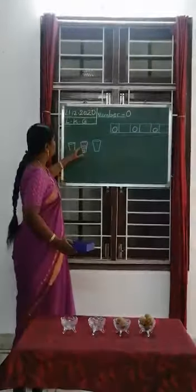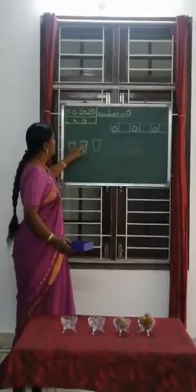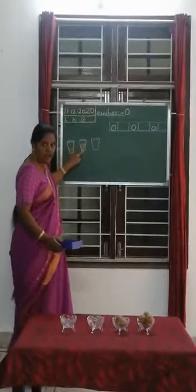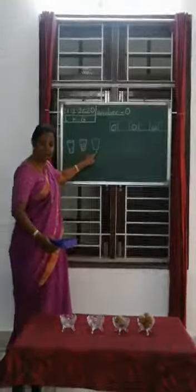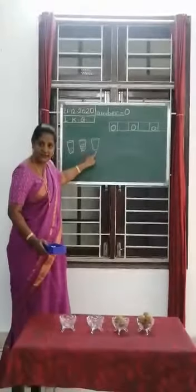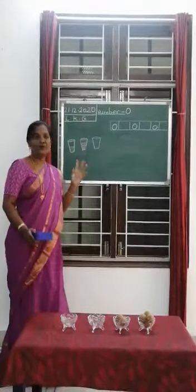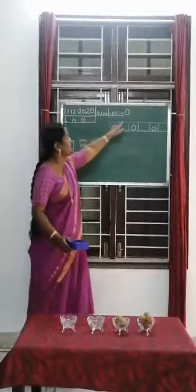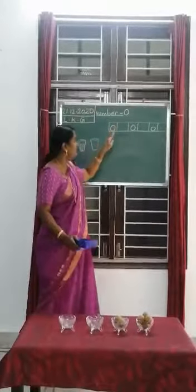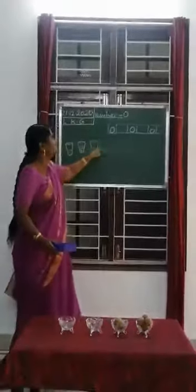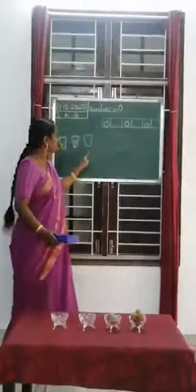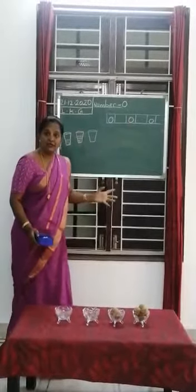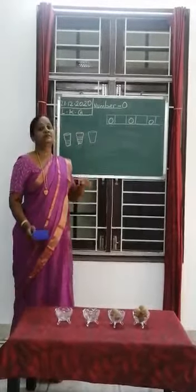And in this glass: 1, 2, 3, 4, 5, 6, 7, 8, 9. But are there any gems in this glass? No, nothing. Nothing means zero. If there is nothing, if something is empty, you say zero.